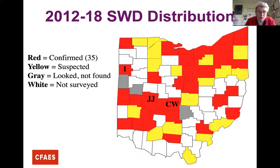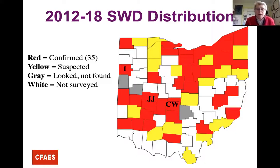Jim and I have been working since 2012 on where it is in Ohio. This map shows counties shaded red where it has been confirmed, yellow where it's suspected, gray where someone has looked and not found it, and white counties where we have not had surveys or confirmed reports. That is where you guys fit in — this year we're making an effort to fill in those gaps.